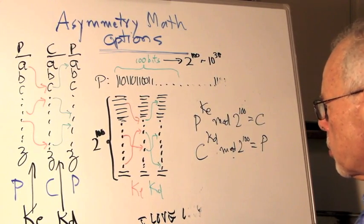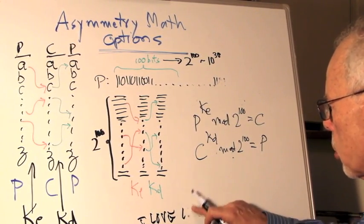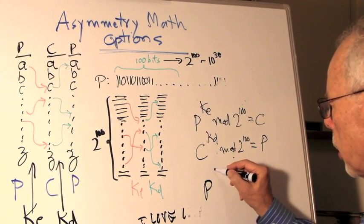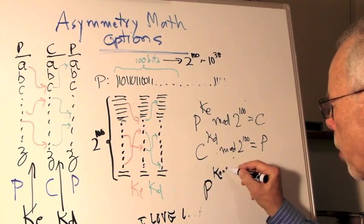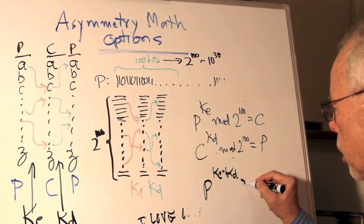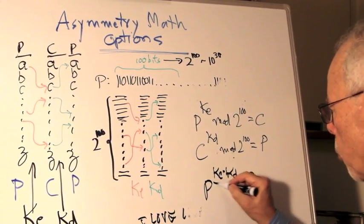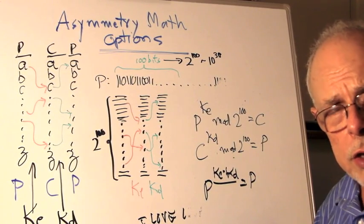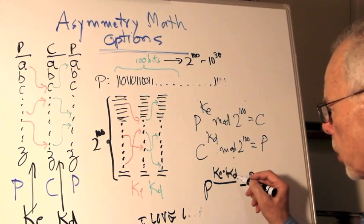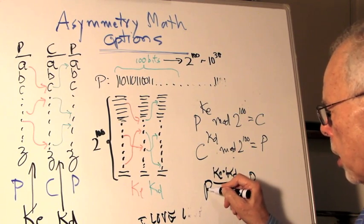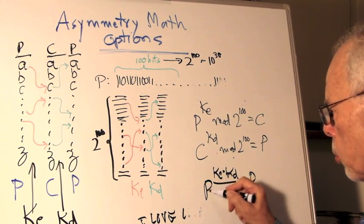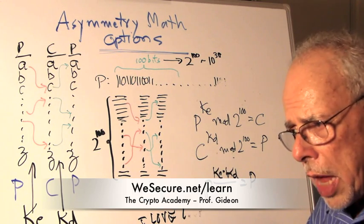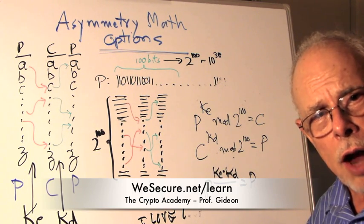And as a result, you will have a situation where you have p to the power of ke to the power of kd equals p. And what is left to do is to find two numbers that are different but they neutralize each other so that by applying one after the other, you get back the original plaintext. And that is what the RSA people have done.